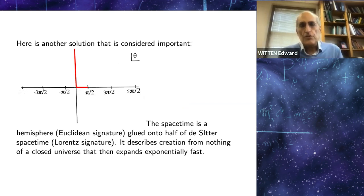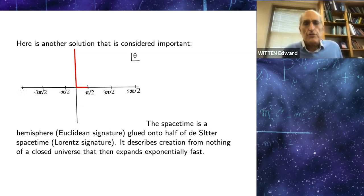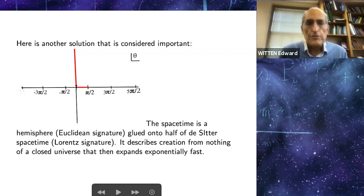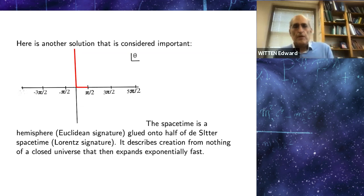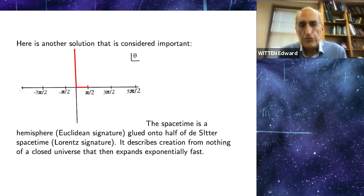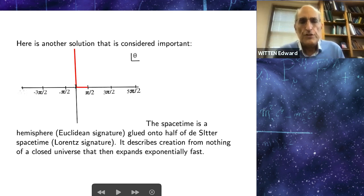Here's another solution considered important: the Hartle-Hawking wave function. Here, we start at pi over two — there's an endpoint there, but it doesn't represent a boundary because that's a zero of the cosine. We go along the real axis to the origin, and then on the imaginary axis to plus infinity. The real axis part gives us a hemisphere, and the imaginary axis part gives us half of de Sitter space. One has Euclidean signature, one has Lorentz signature. They meet nicely at theta equals zero, where they both describe a sphere of radius rho. So this is a solution that describes creation from nothing of a closed universe that then expands exponentially fast.